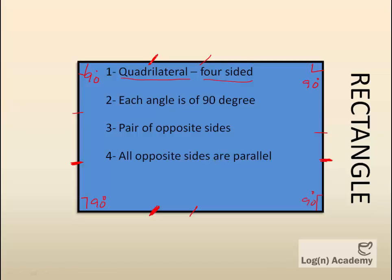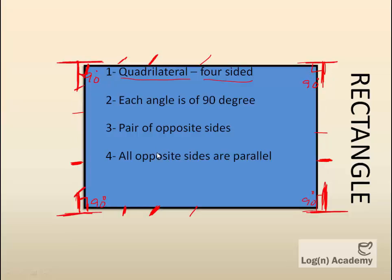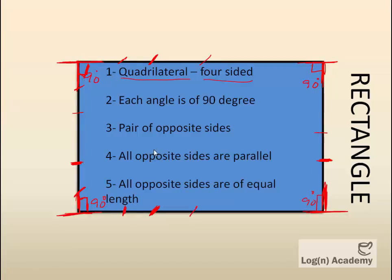This is one opposite side, and this is its opposite side. These two sides are parallel. However, adjacent sides are not parallel — they are perpendicular, forming 90-degree angles. This line is perpendicular to this line, and this line is perpendicular to this line.